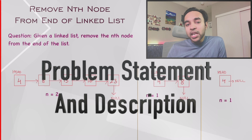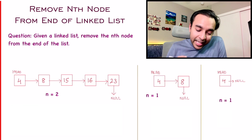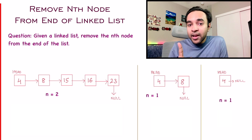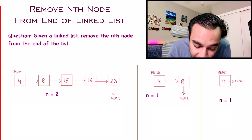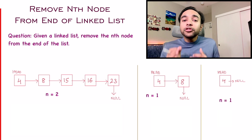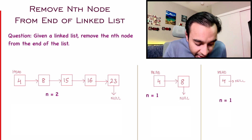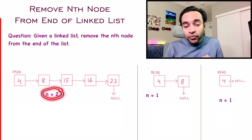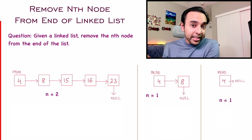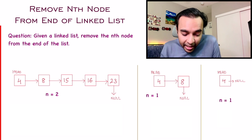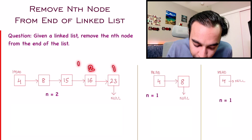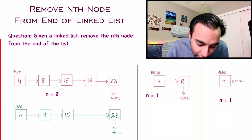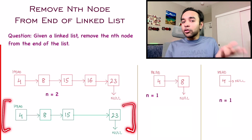First of all, let's make sure we are understanding the problem statement correctly. It is pretty straightforward. You are given a linked list and a value of n, and you have to remove the nth node from the end of the list. For example, in our first test case, I have my list and the value of n is 2. So you have to remove the second node from the end — that means this is the first node, this is the second node, so you have to remove this node. When this node gets removed, my new list will look something like this. So this is what you have to return.